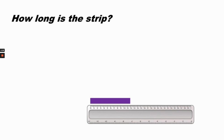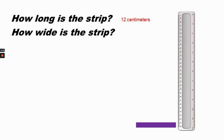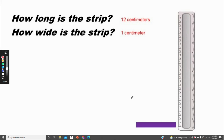Look at the ruler. How long is the purple strip? It's 12 centimeters long because we're looking at the centimeter side of the ruler. How wide is the purple strip? It's one centimeter. I know this because I found the tick mark where the top of the strip lines up with the one-centimeter mark.